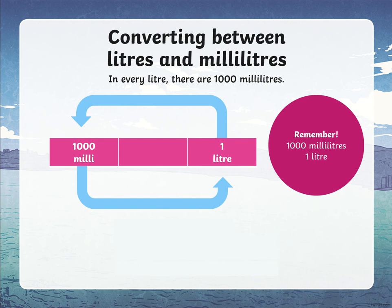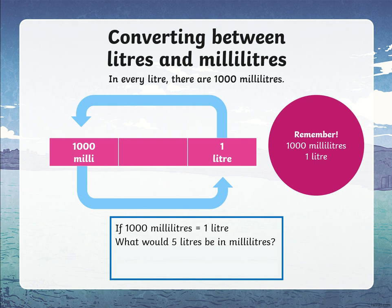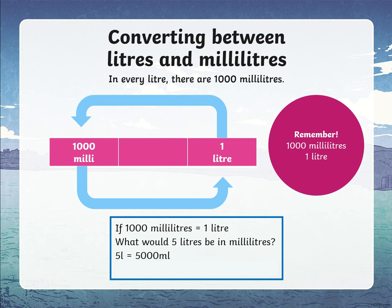So if 1,000 milliliters equals one liter, what would five liters be in milliliters? If we're trying to find five liters in milliliters, you would multiply by 1,000. So five times 1,000 equals 5,000 milliliters, because you're adding three zeros to the end.